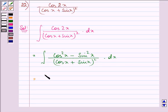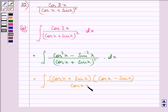Now we can write a² - b² as (a + b)(a - b) where a is cos x and b is sin x. So we have (cos x + sin x)(cos x - sin x) divided by (cos x + sin x)² dx.